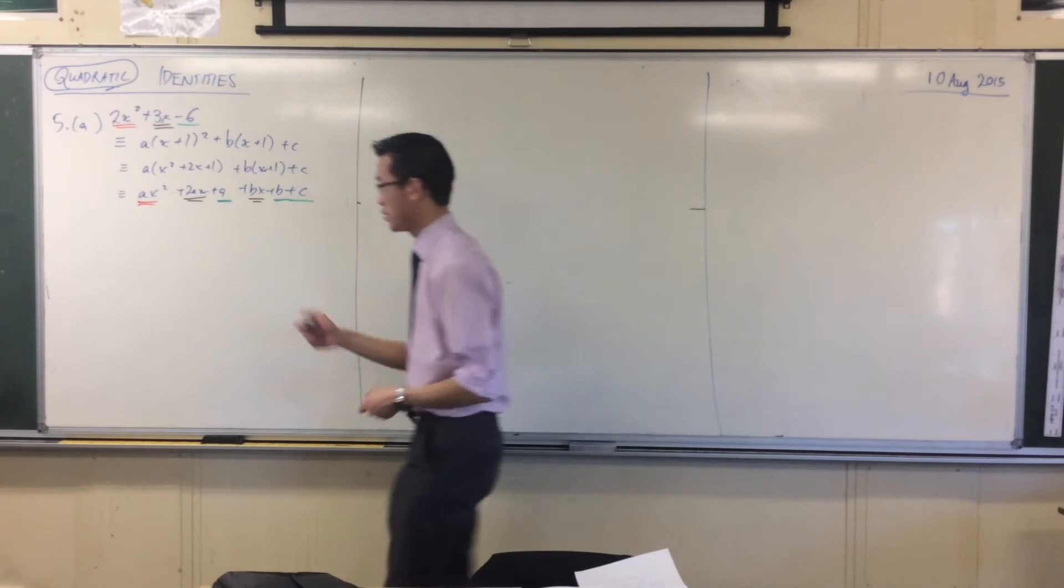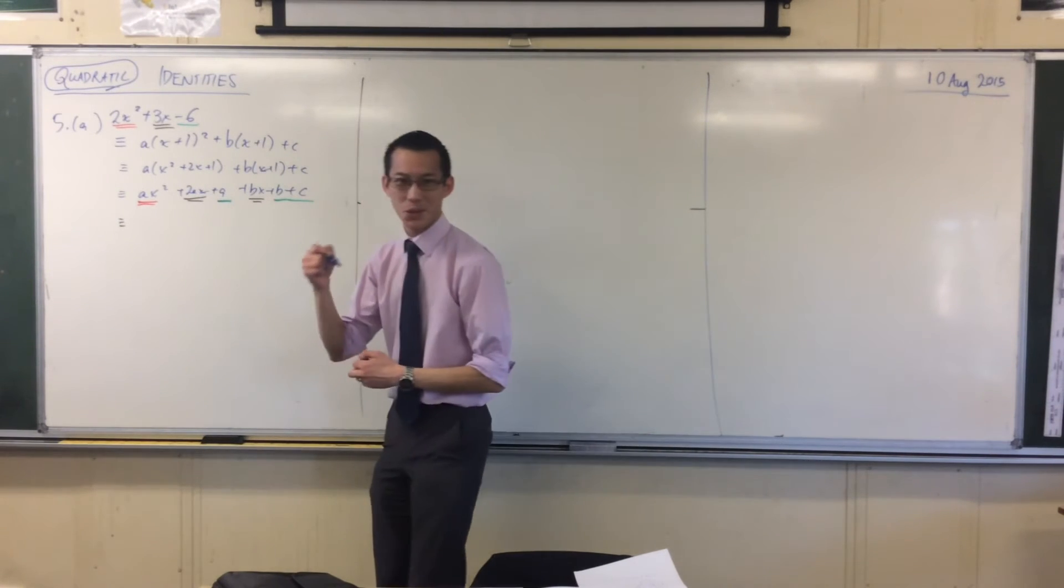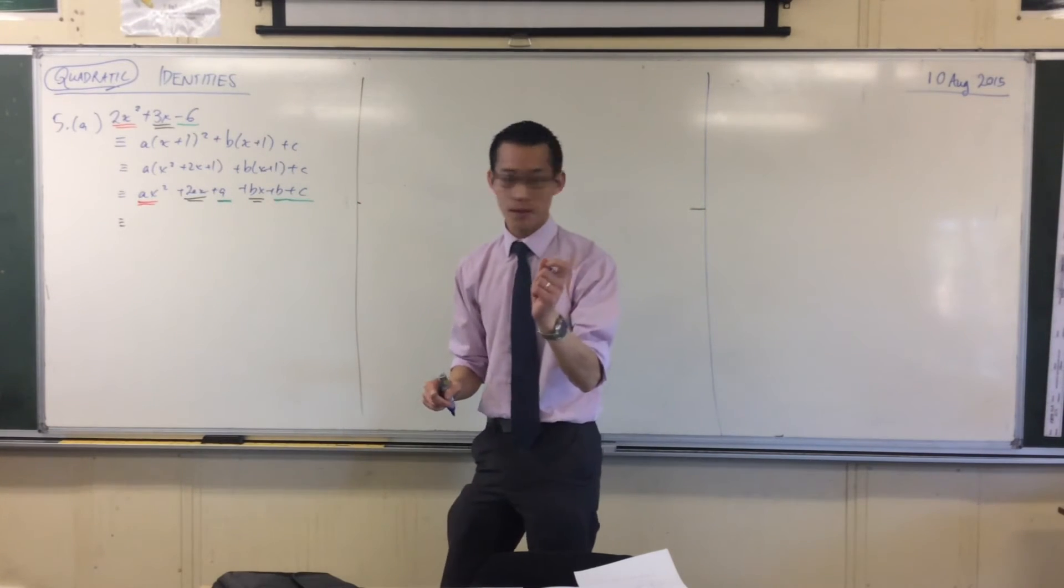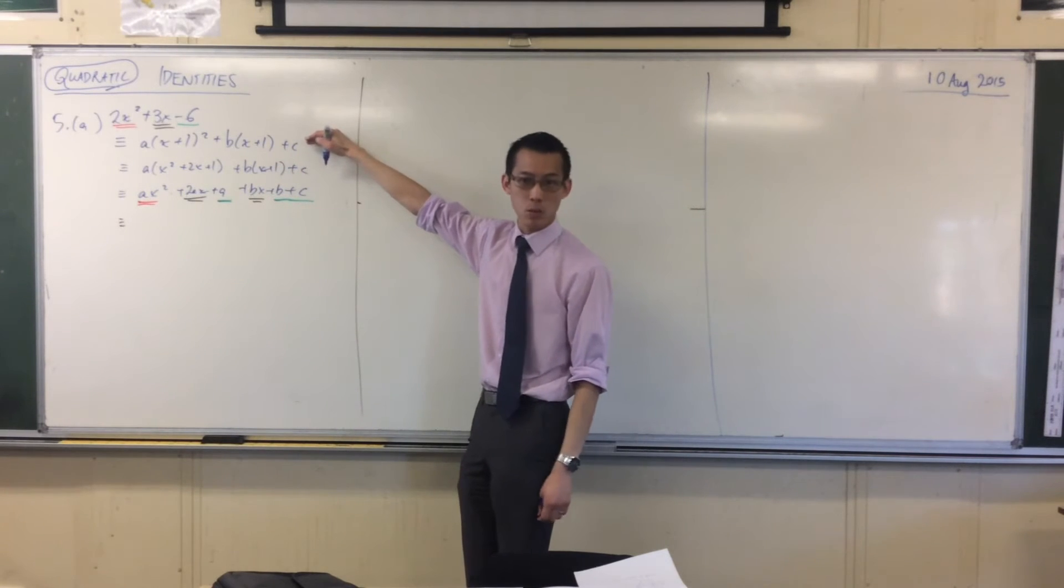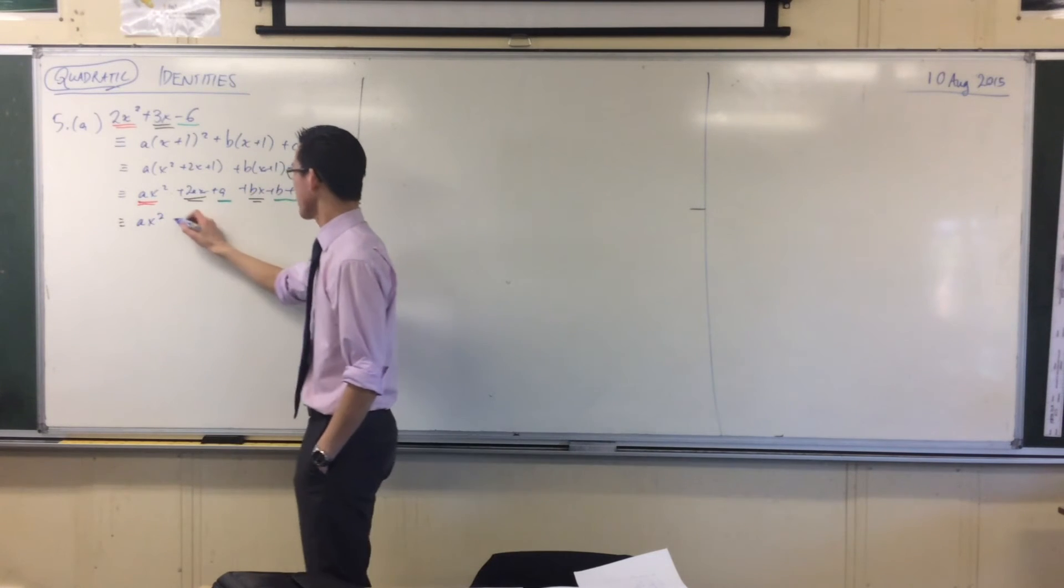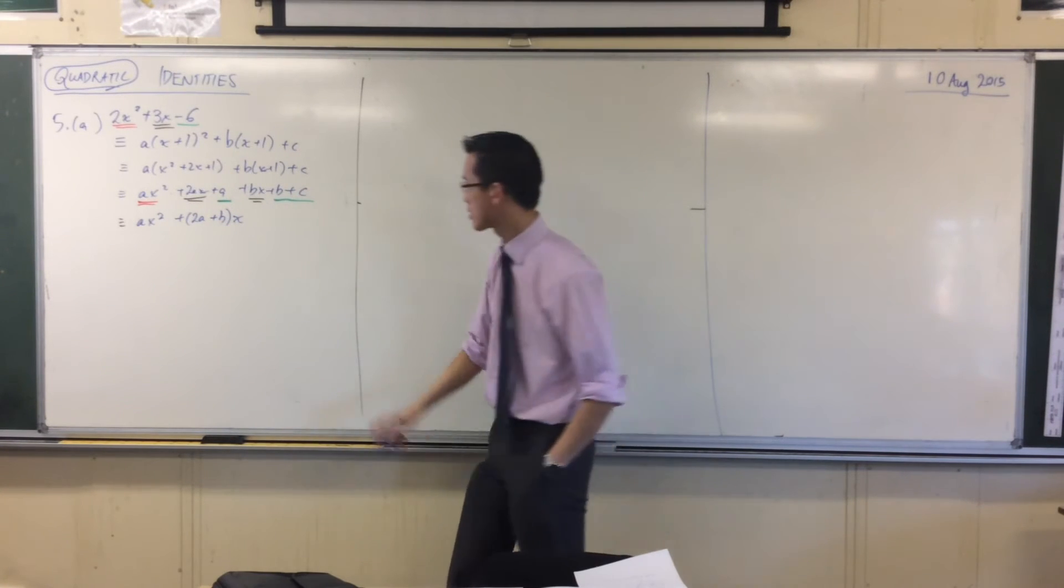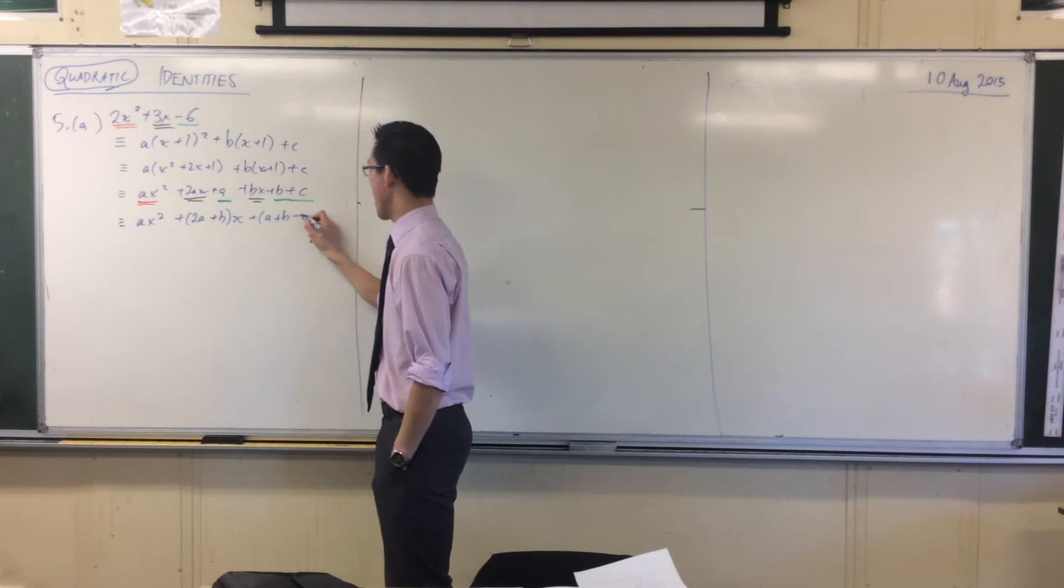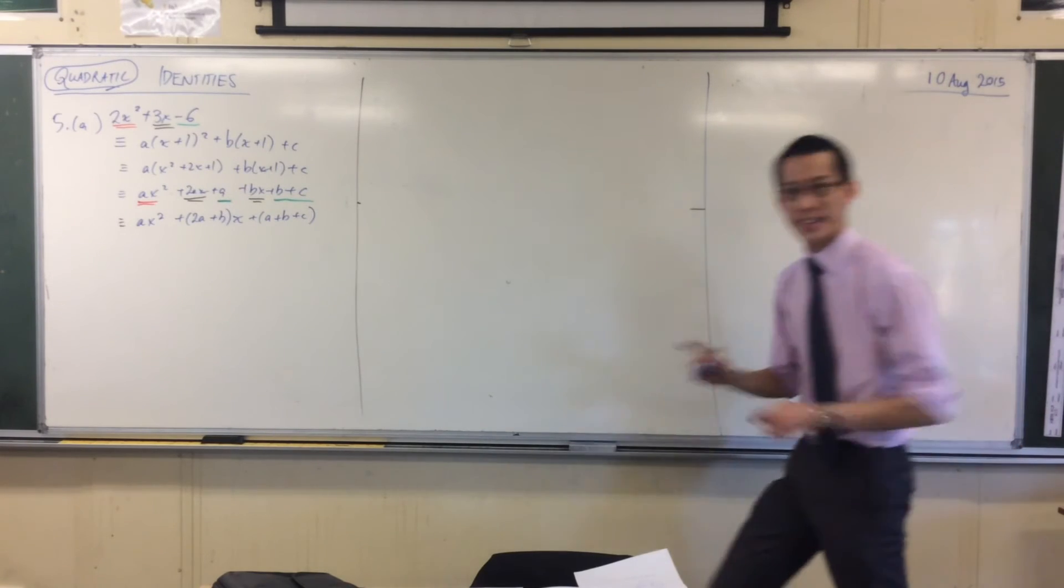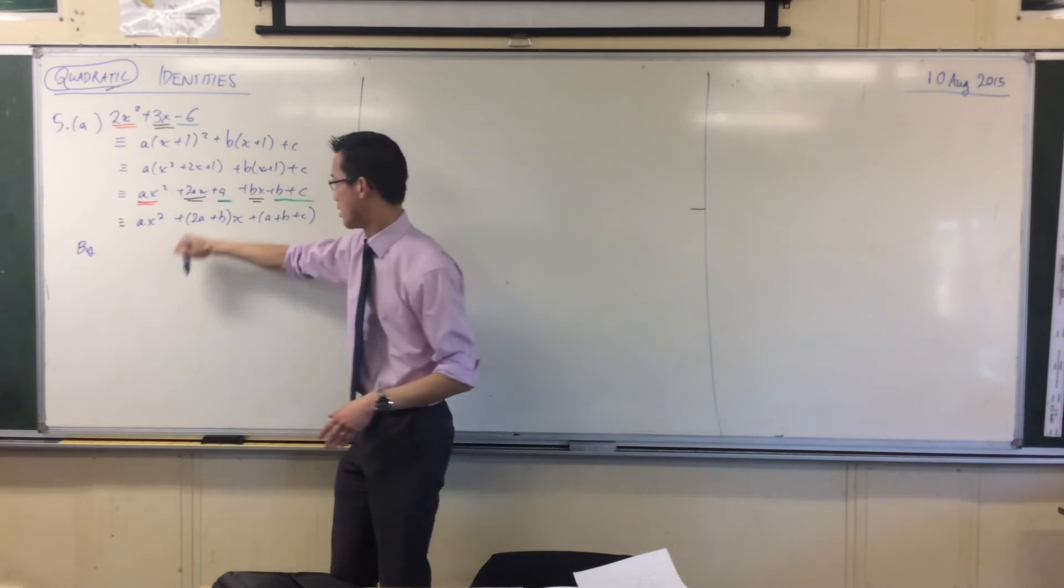Just to make that really clear, I'm going to rewrite this in general form. I've gone from a quadratic in x+1 to writing it as a quadratic in x. Here's my x² term, here's my x term—you see I factored out the x—and here's my constant term. Now I can say, just like I did with the auxiliary angle, by comparison of coefficients, this side and that side.